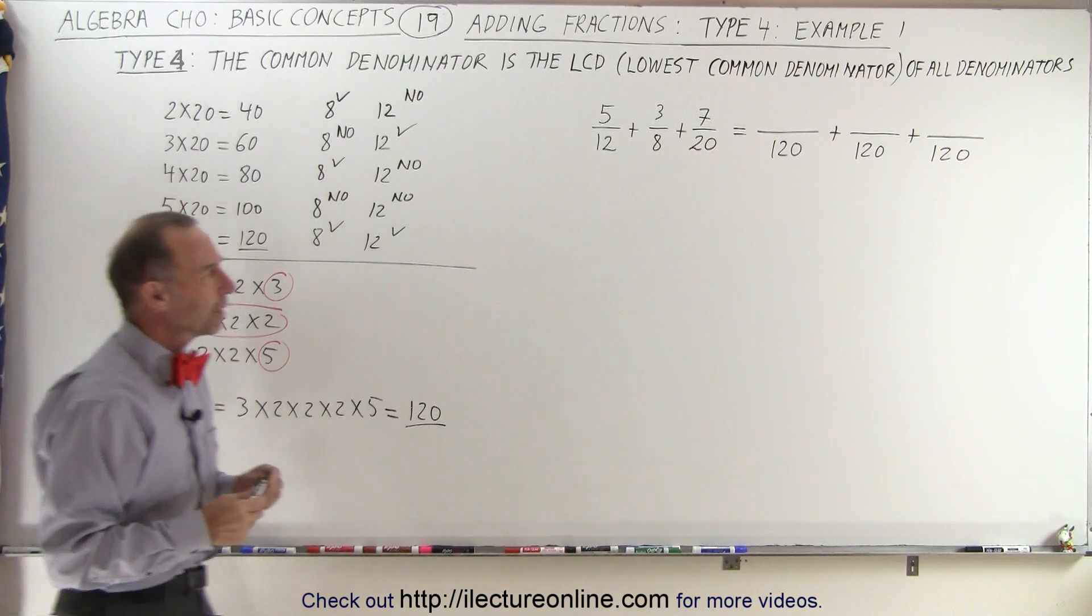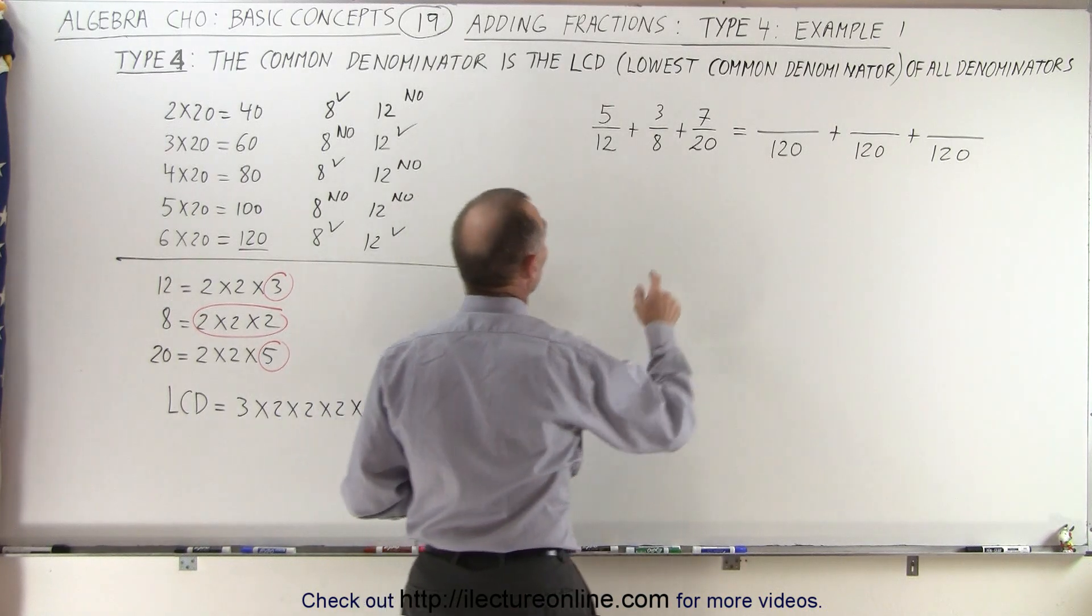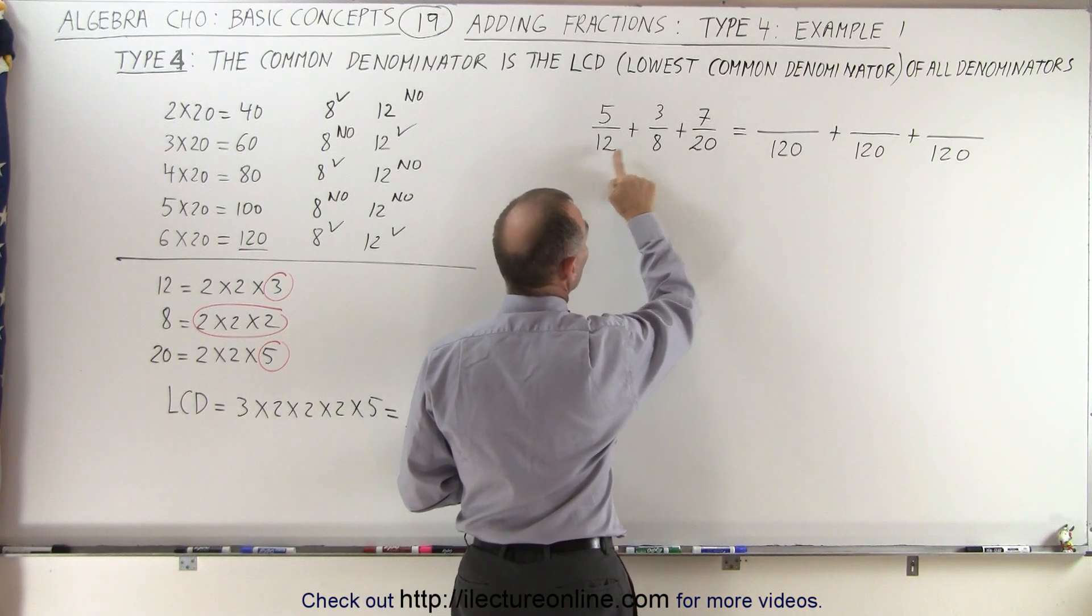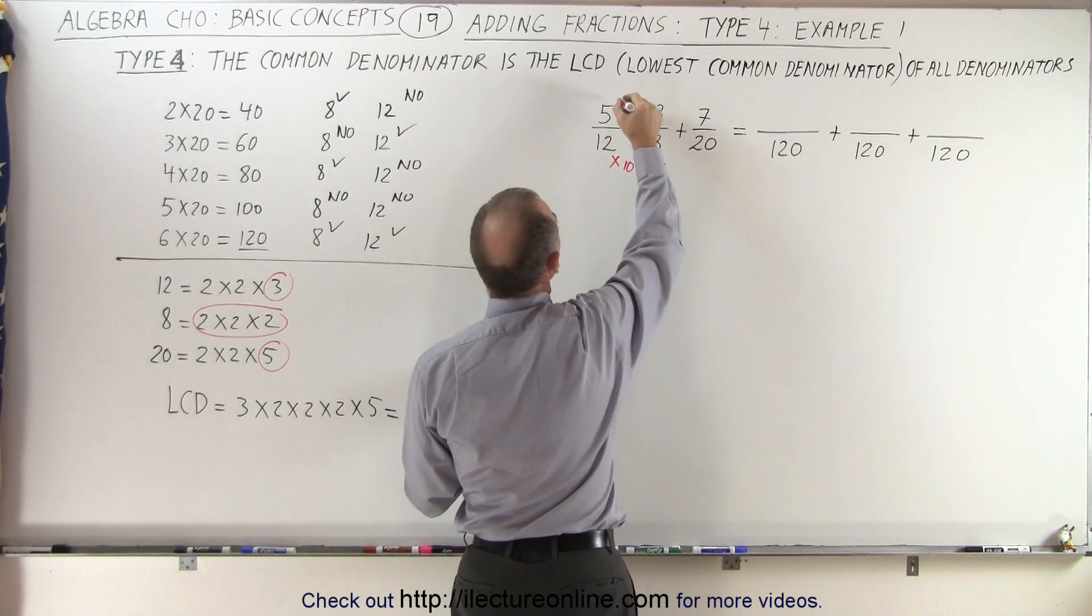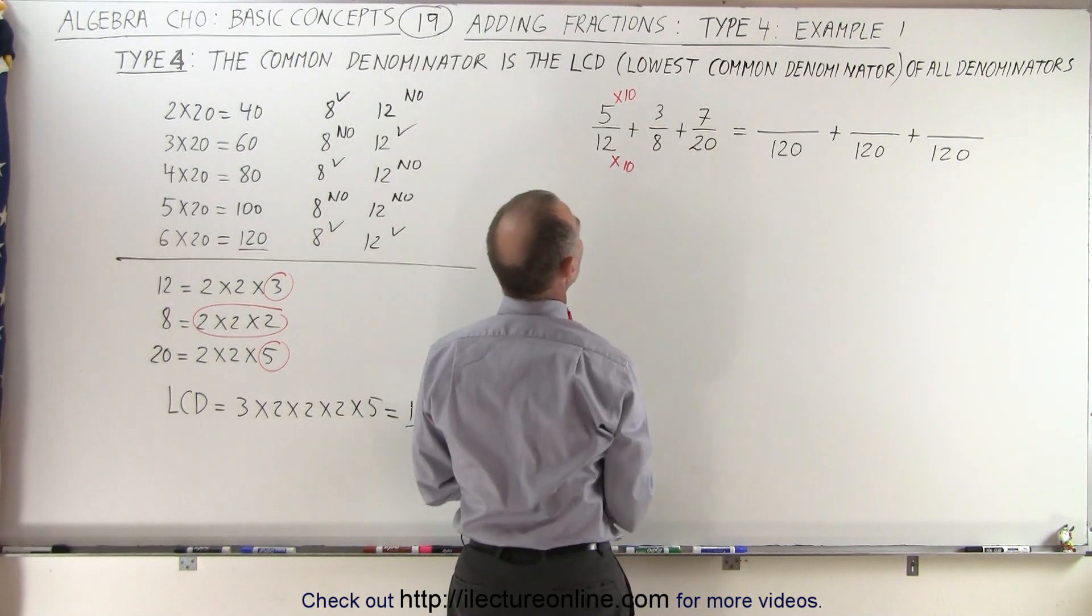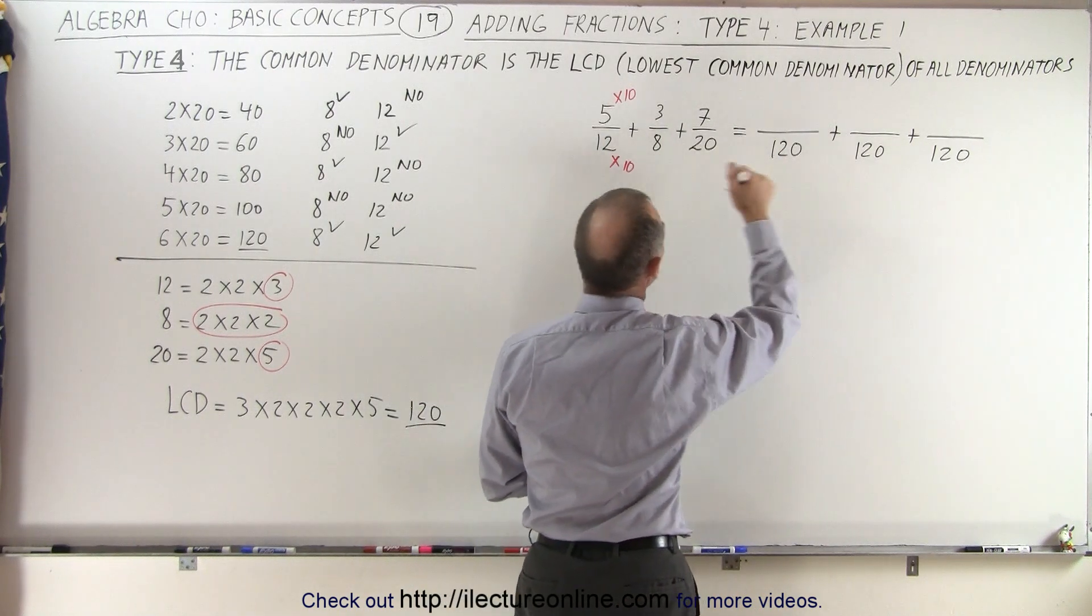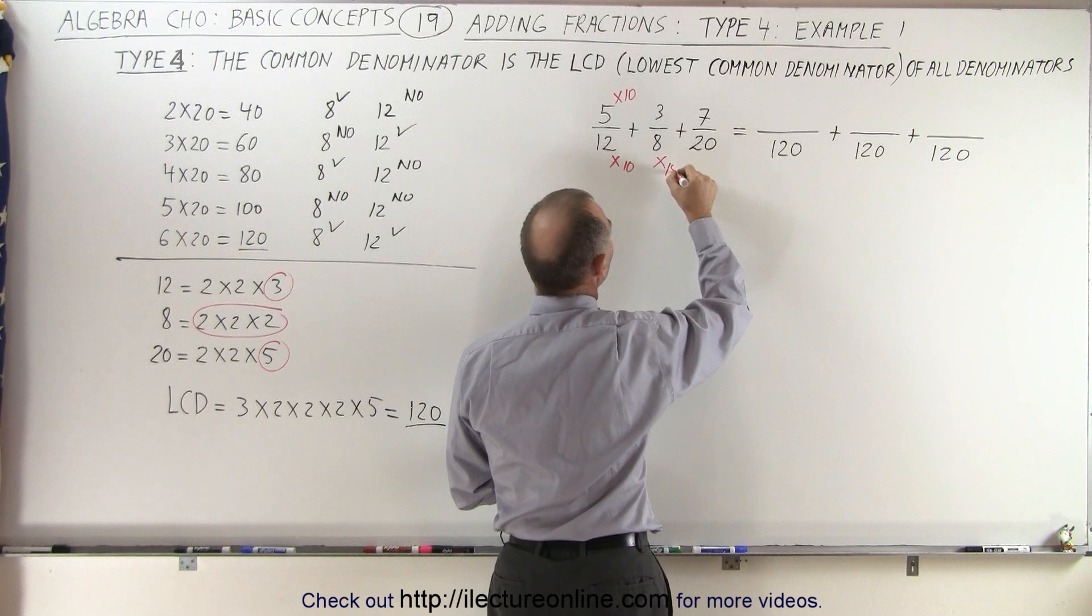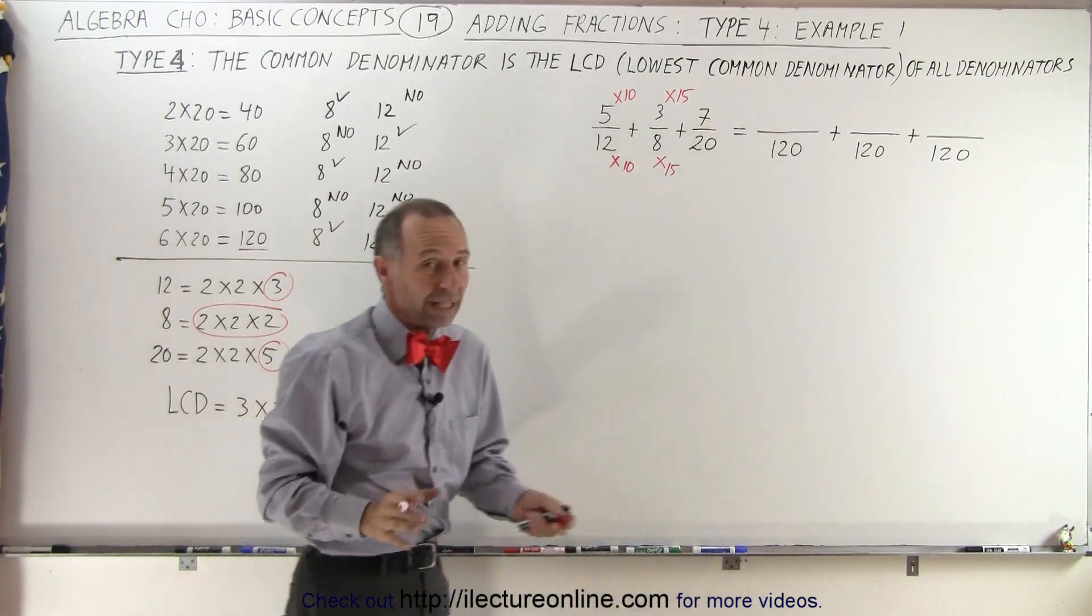Now that we've found the common denominators, now we take a look here and ask ourselves the question, what did we have to do to this denominator to turn it into 120? We have to multiply this one times 10, which means we have to multiply the numerator times 10 as well. Here, 8, to get from 8 to 120, we have to multiply this denominator by 15, which means we must multiply the numerator by 15 as well.